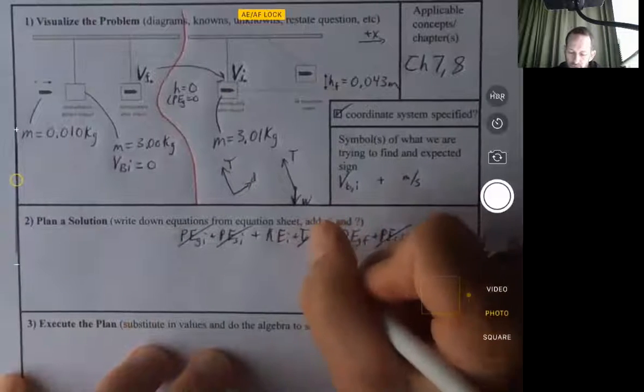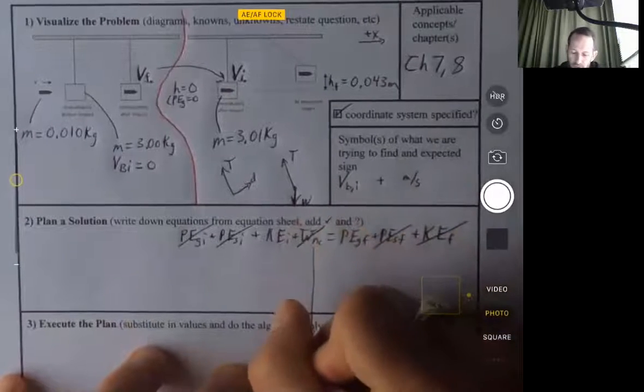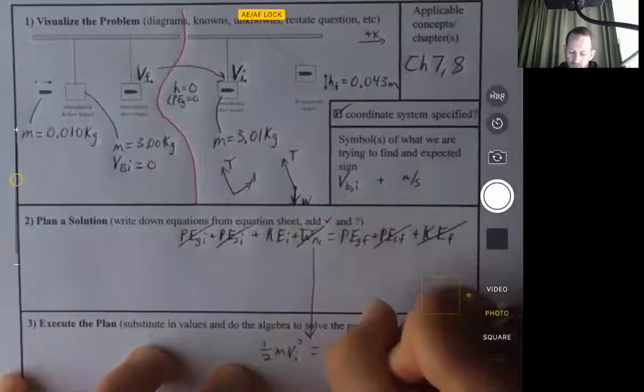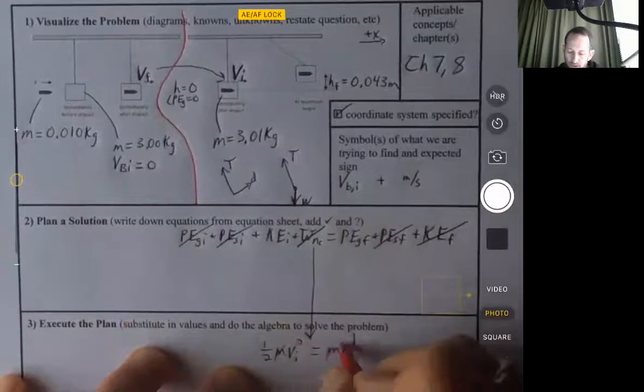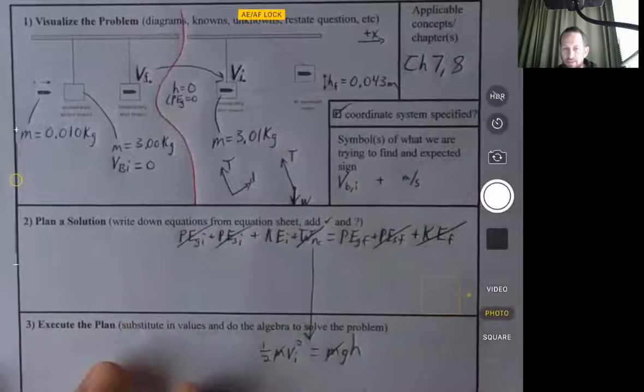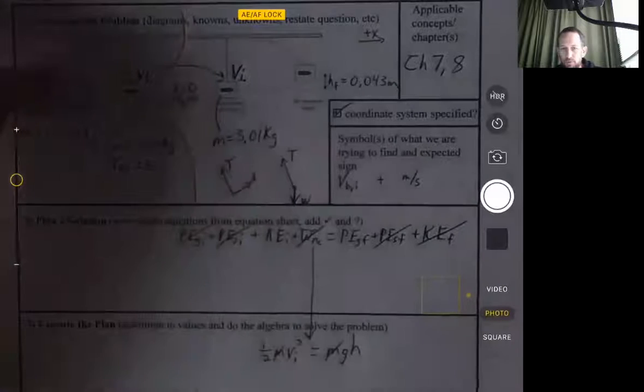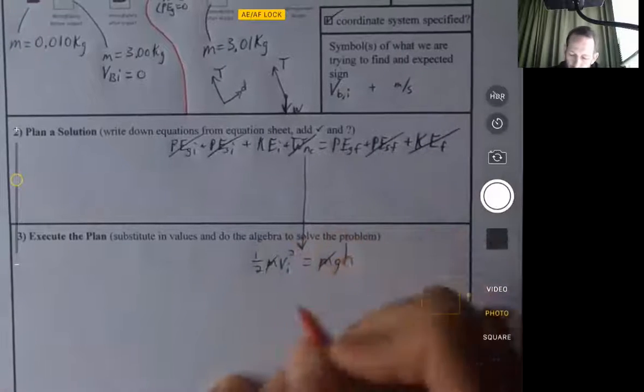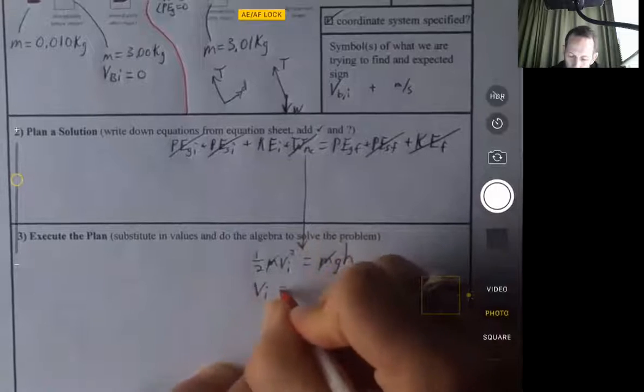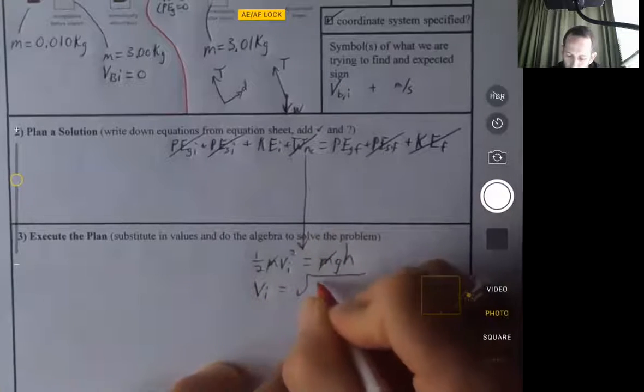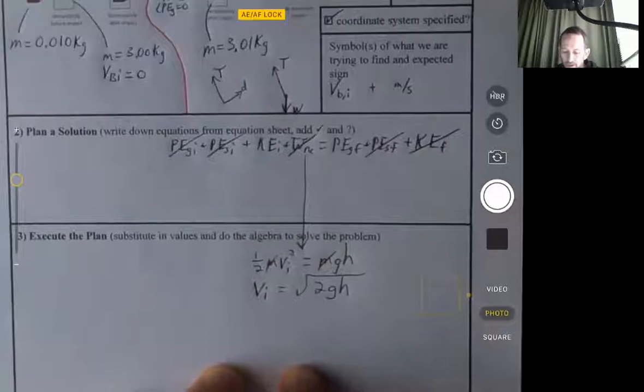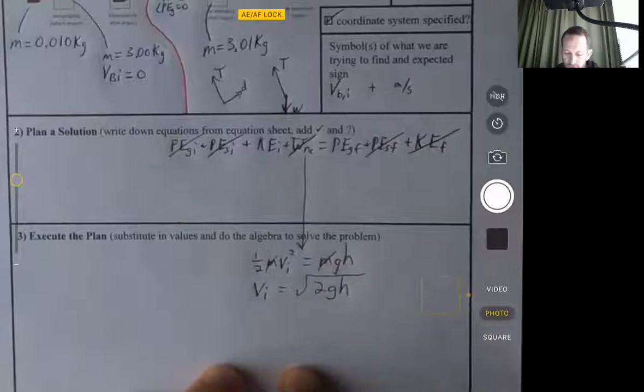So our plan is to use this equation. We can say one half M V-I squared equals M G H. We can divide both sides by the mass, and so that will come out of our equation. Then we can solve for V sub I. It's going to be equal to the square root of 2 G H. So I multiply both sides by 2 and then I took the square root of both sides.